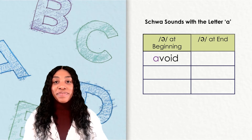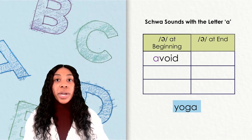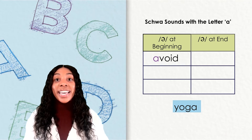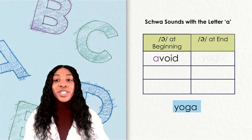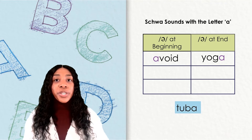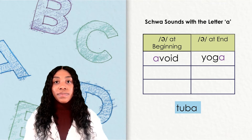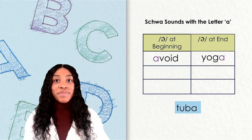Let's try another word: yoga. Go ahead and write down the word yoga on your paper. Here's our next word: tuba. Does tuba have the schwa sound at the beginning or the end? Tuba has the schwa sound at the end. Go ahead and say this word again — tuba.